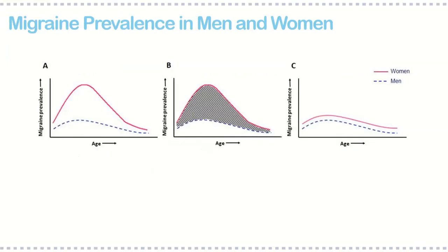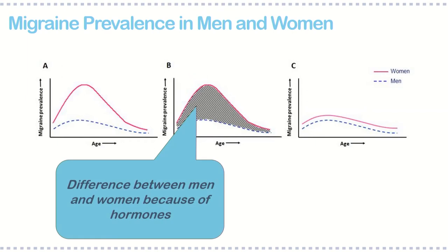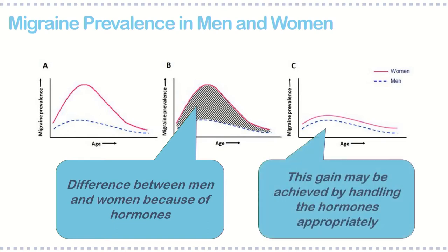Looking at migraine prevalence in women and men over age, migraine is clearly much more prevalent in women. This difference starts after menarche and declines after menopause, suggesting it is very likely caused by different levels of sex hormones. If we performed studies really directed at understanding the role of sex hormones — which has been largely neglected in the literature — we could potentially reduce migraine prevalence in women to the level of men, and preliminary studies suggest estradiol is also involved in migraine in men.